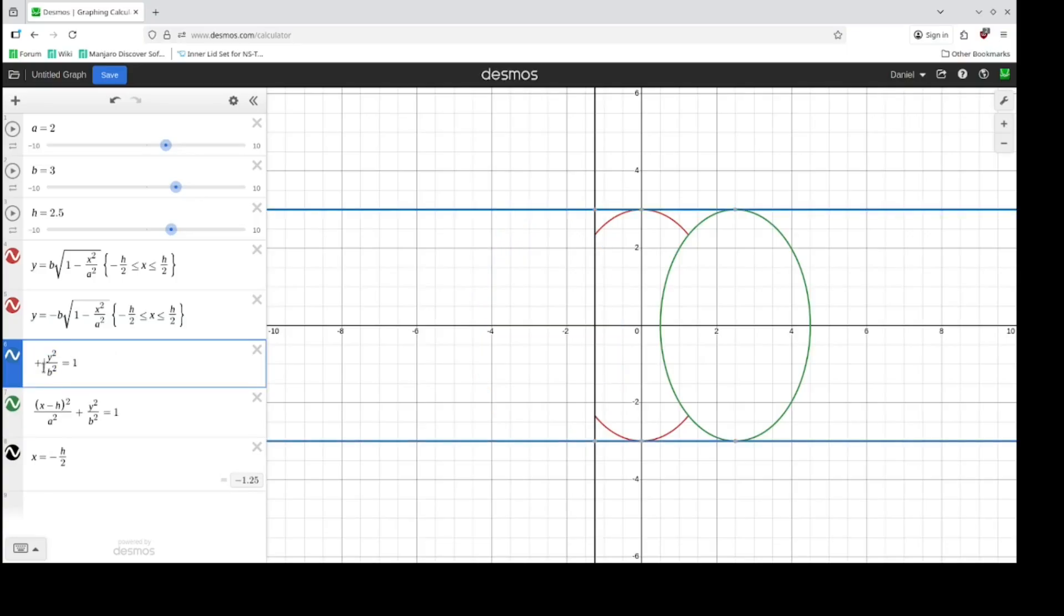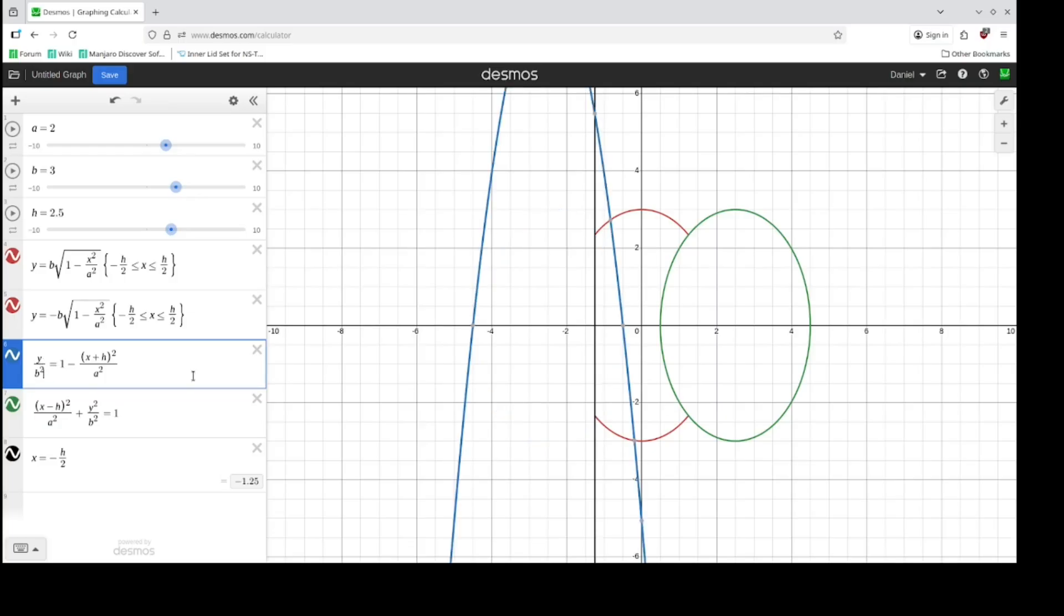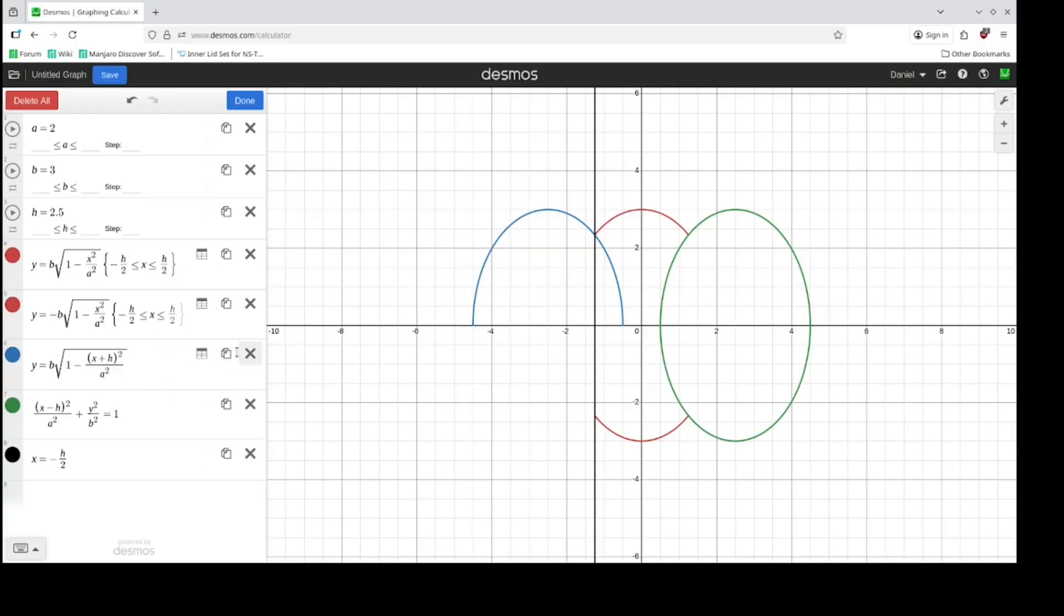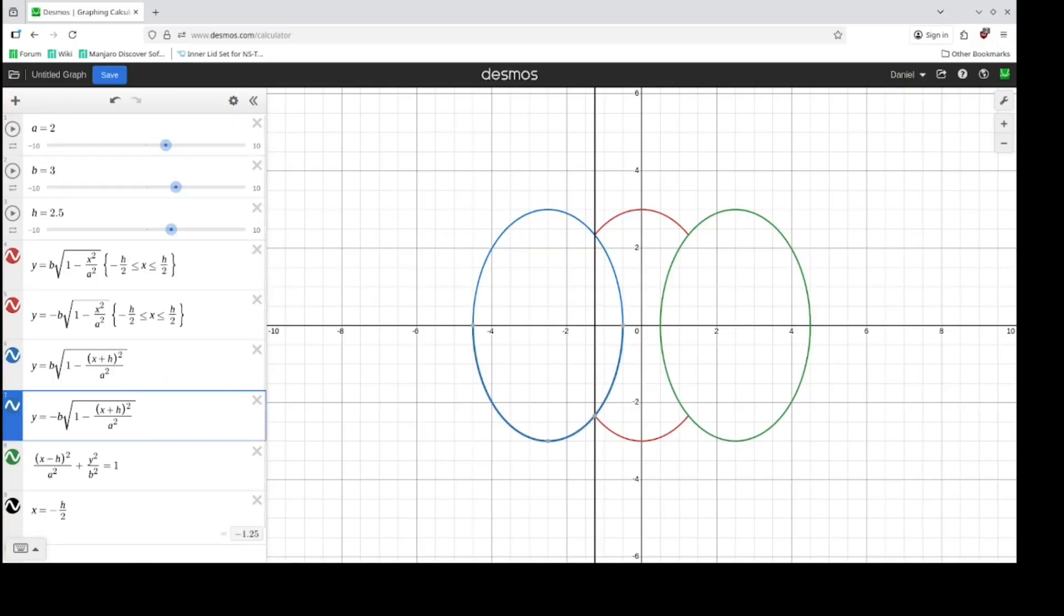Subtract this over, take the square root of both sides, and multiply b over to the other side. This is our top half. Now we need a bottom half. And we know that this point here is minus h over 2, so make this x is less than or equal to minus h over 2. Copy and paste it to the bottom.